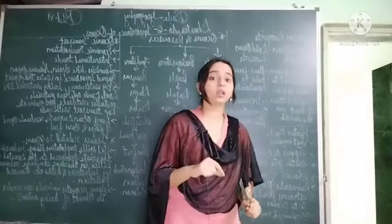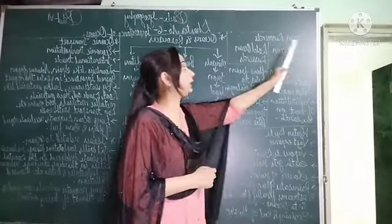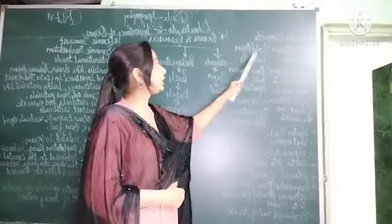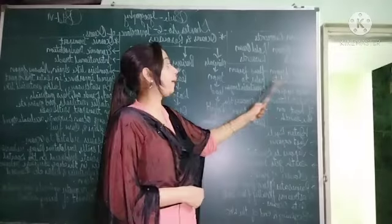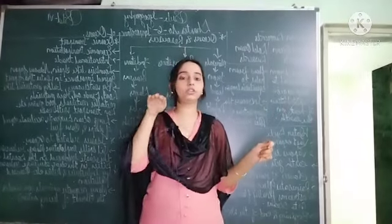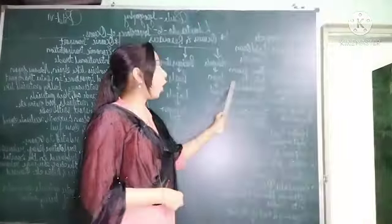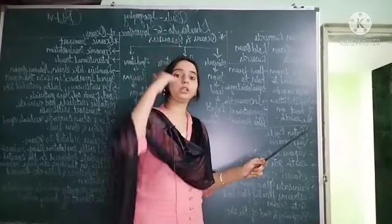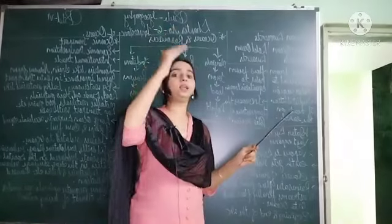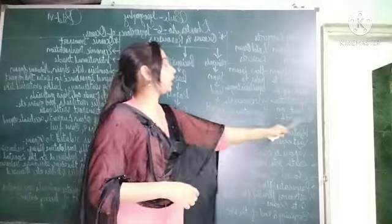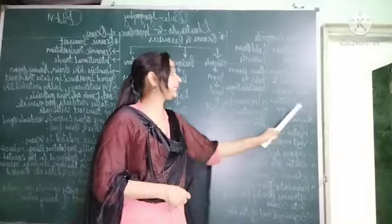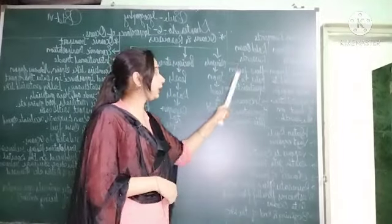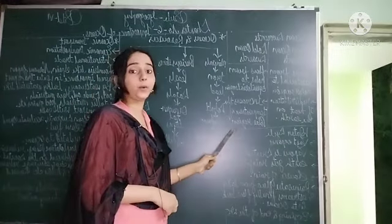Ocean currents: planetary winds move the oceanic water in the form of currents, known as ocean currents. There are two types: warm ocean current and cold ocean current. Warm ocean currents move from the equatorial to the polar region. Cold ocean currents flow from the polar to the equatorial region. This warm oceanic current leads to redistribution of heat on the earth, and cold ocean currents increase the temperature of the polar region.